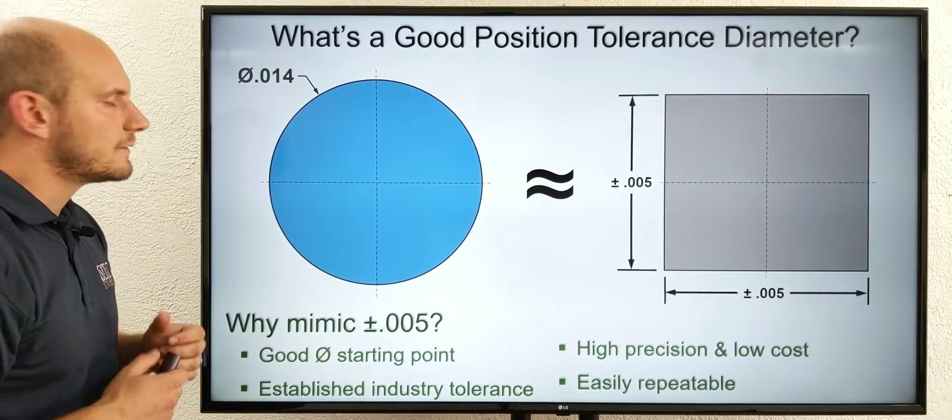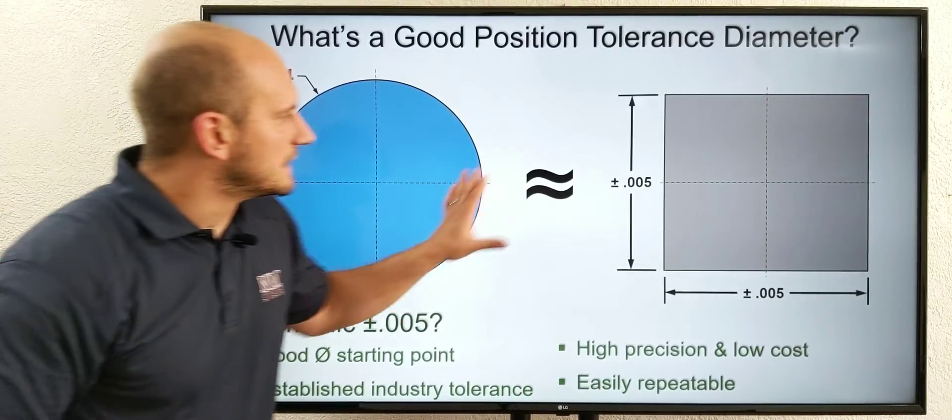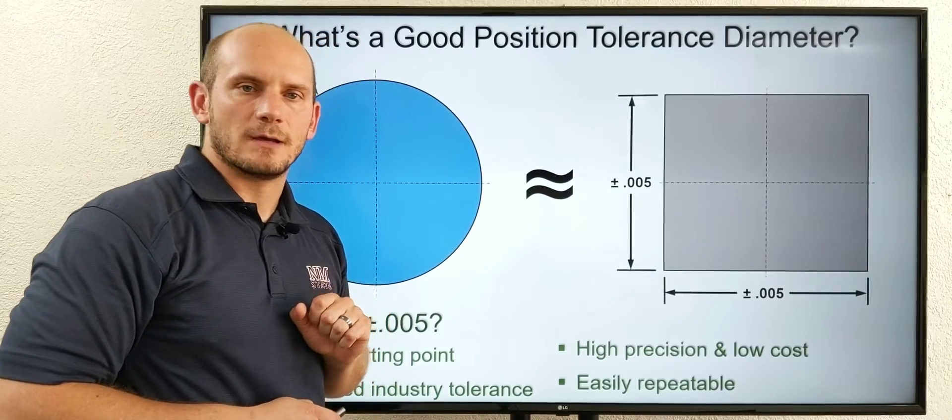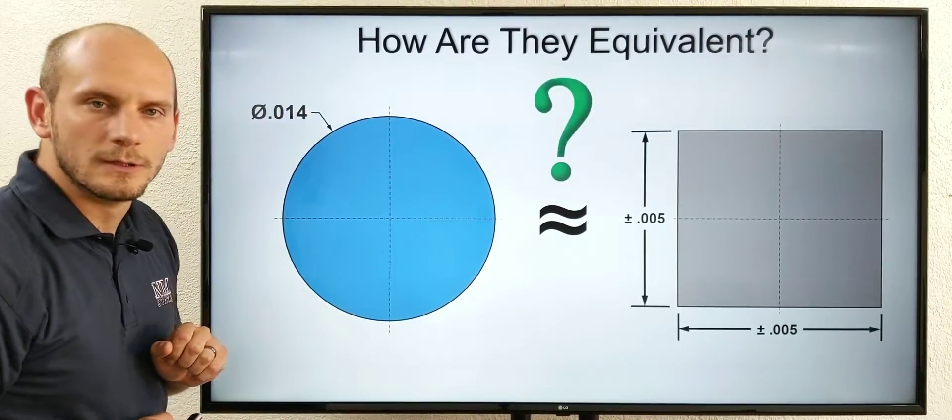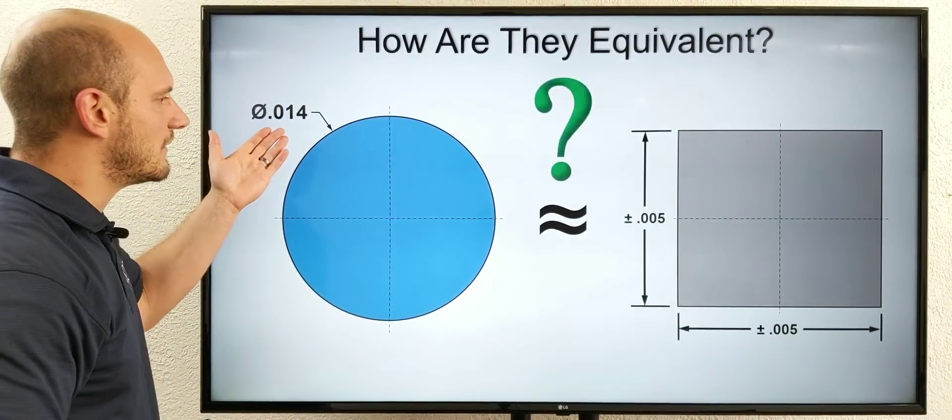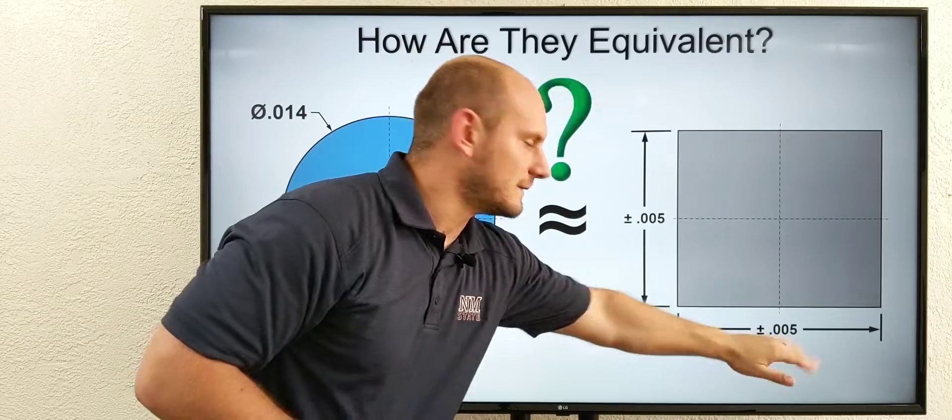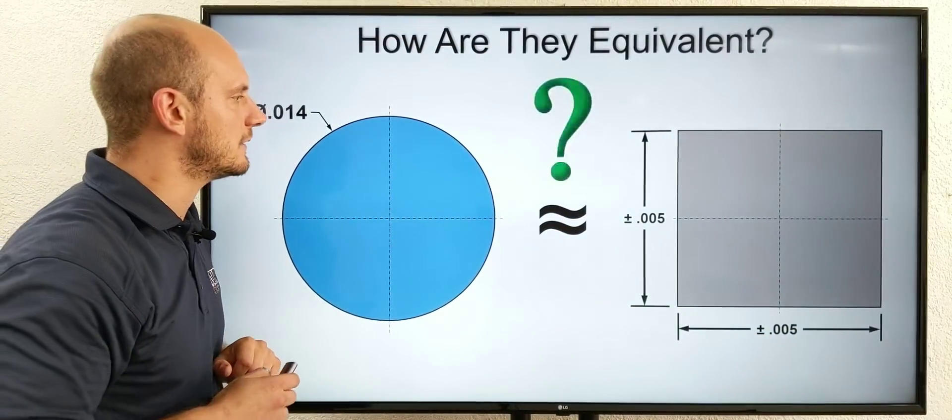So I'm recommending you use fourteen thousandths because it's equivalent to this traditional plus or minus five. You might be wondering, how in the world are those two equivalent? This is fourteen thousand and this is plus or minus five. Well, to convert from one to the other, let's take a look.